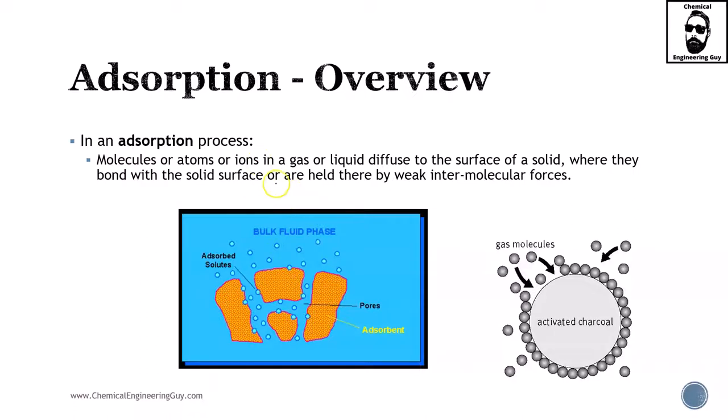In an adsorption process, molecules or atoms or even ions in a gas or liquid will start diffusing from the fluid phase to the surface of the solid, where they will bond either chemically or more likely physically with these types of interactions: weak intermolecular forces.